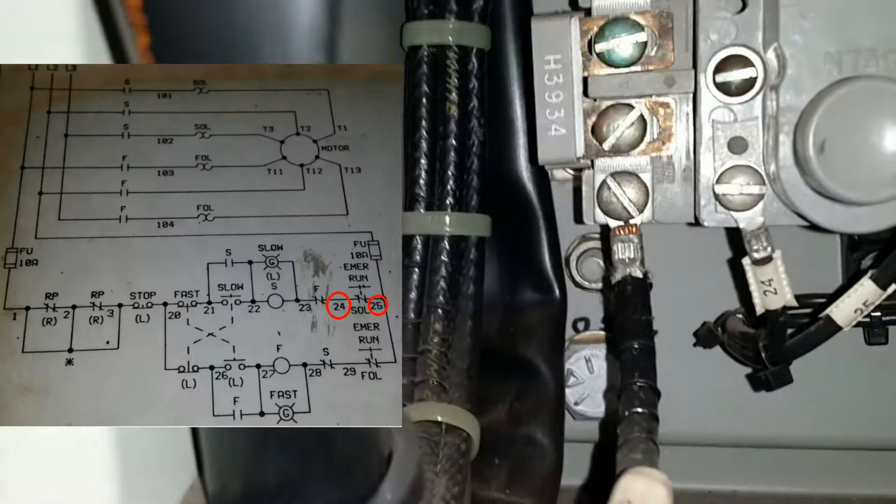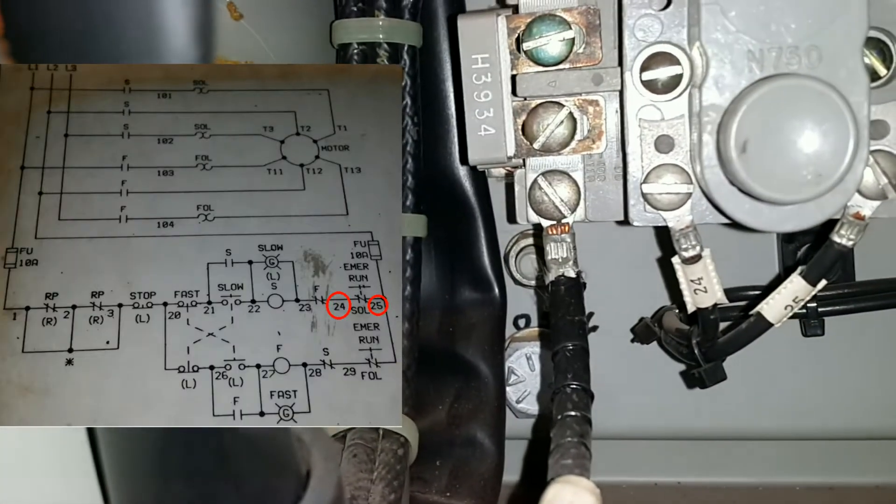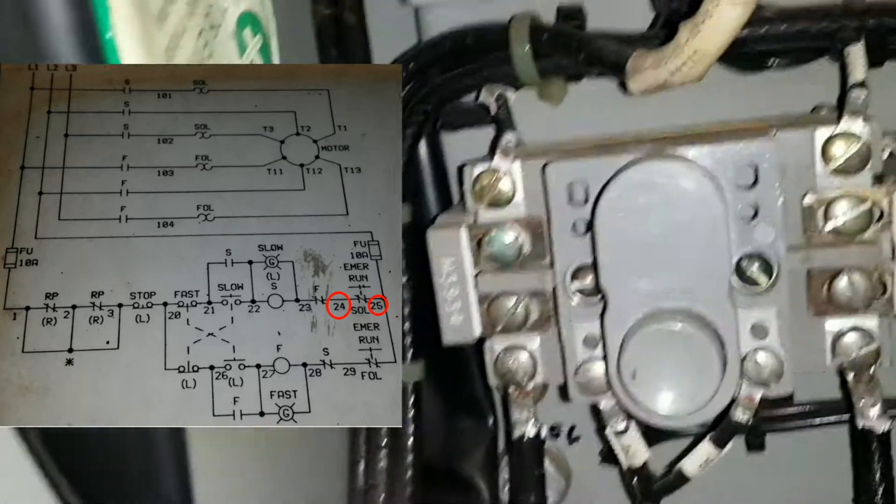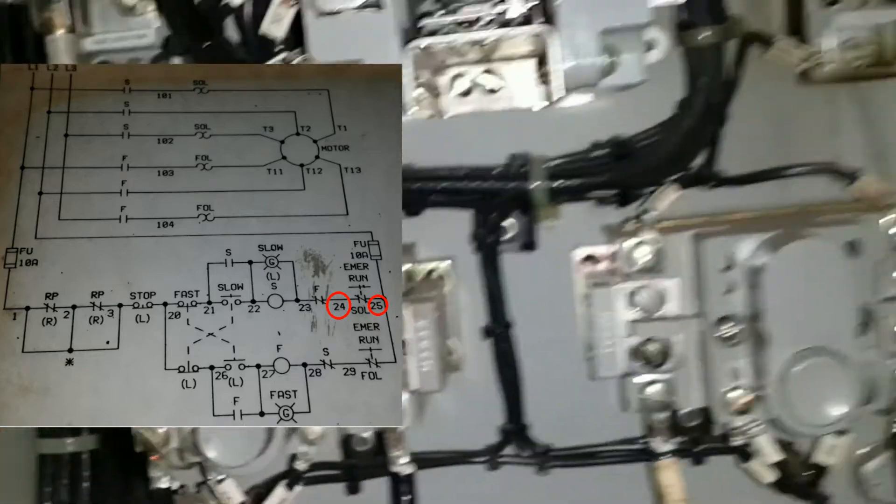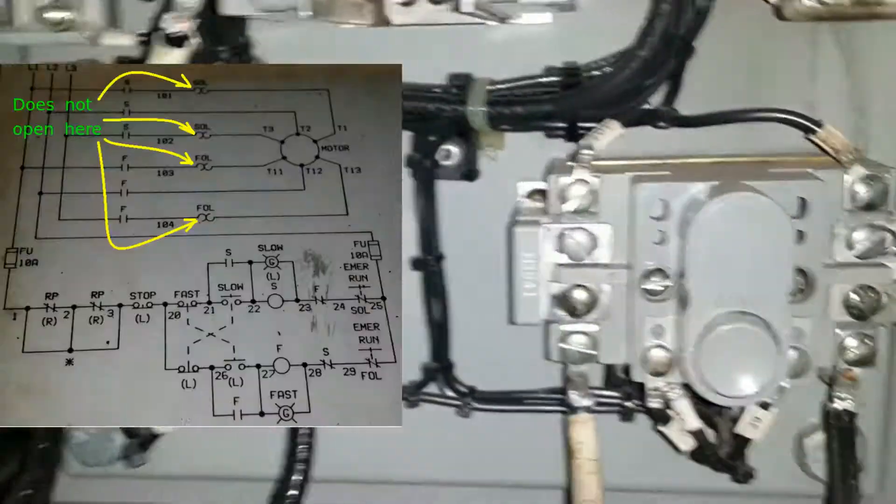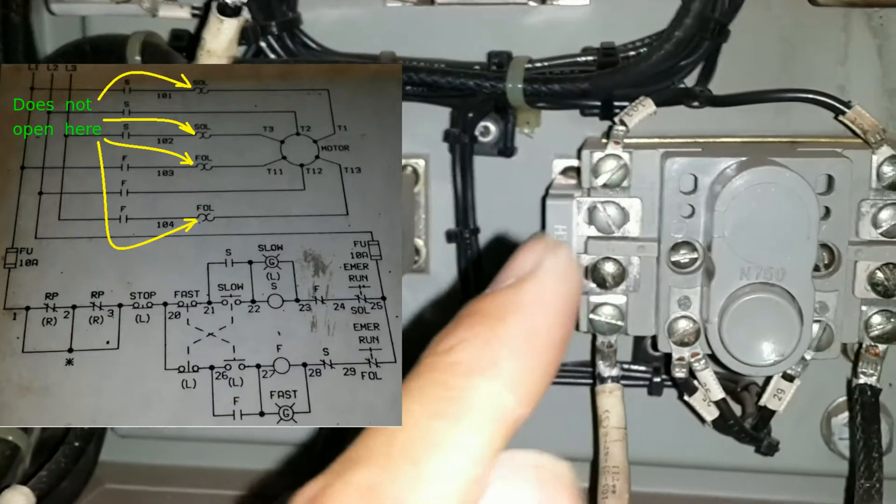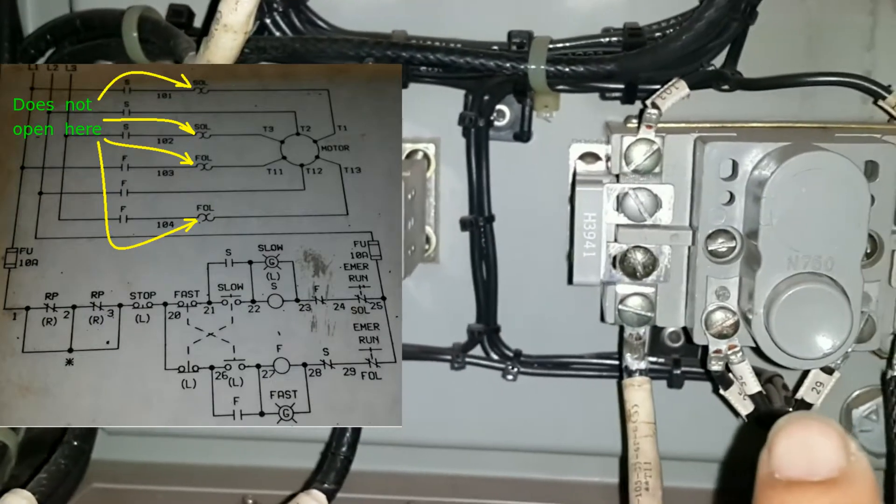And this is the low speed overload switch. Keep in mind that if the motor gets into trouble and it starts to get too hot, this is not what opens. What opens is the contacts that are here and there.